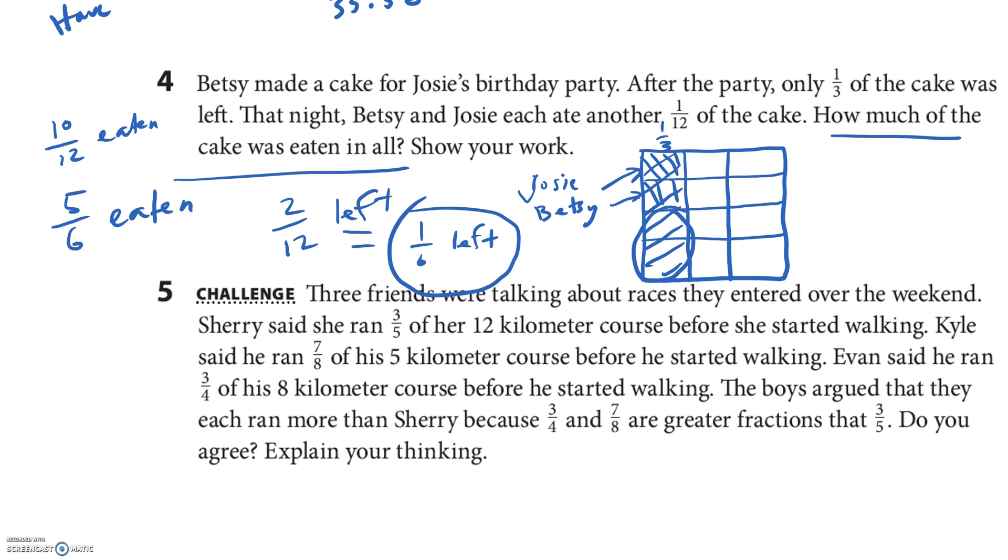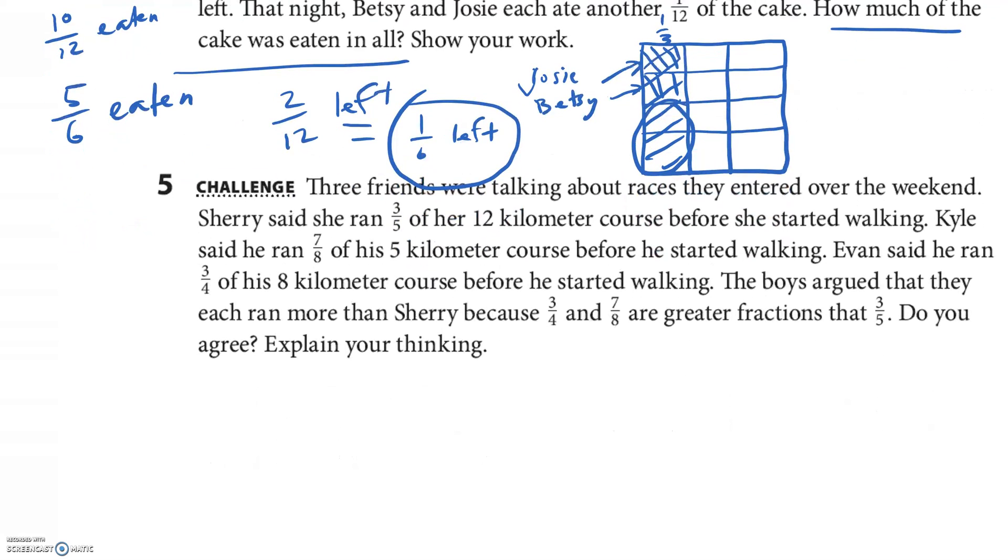Okay, let's see if we can get this last one if we can get in our time limit. Three friends were talking about races they entered over the weekend. Sherry said she ran 3/5 of her 12-kilometer course before she started walking. Kyle said he ran 7/8 of his 5-kilometer course before he started walking. Evan said he ran 3/4 of his 8-kilometer course before he started walking. The boys argued that they each ran more than Sherry because 3/4 and 7/8 are greater than 3/5, which is all true. Do you agree? Well, let's look at what we have.